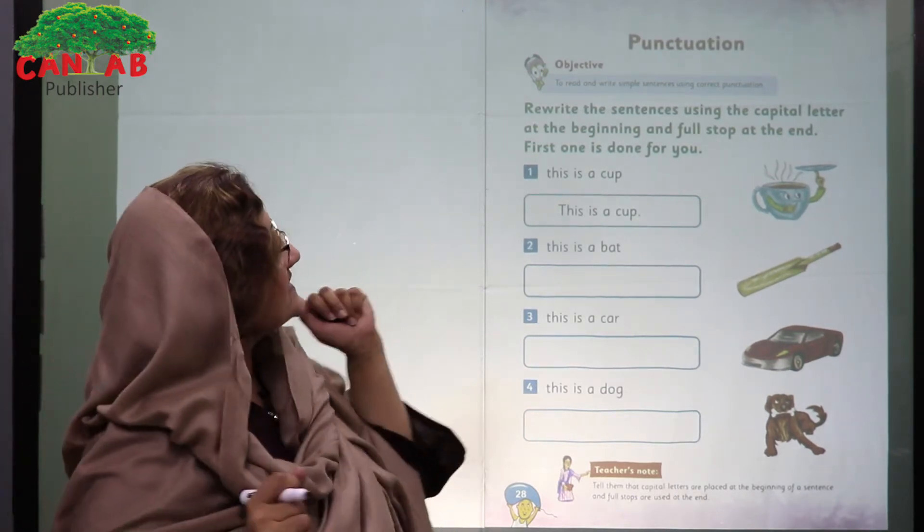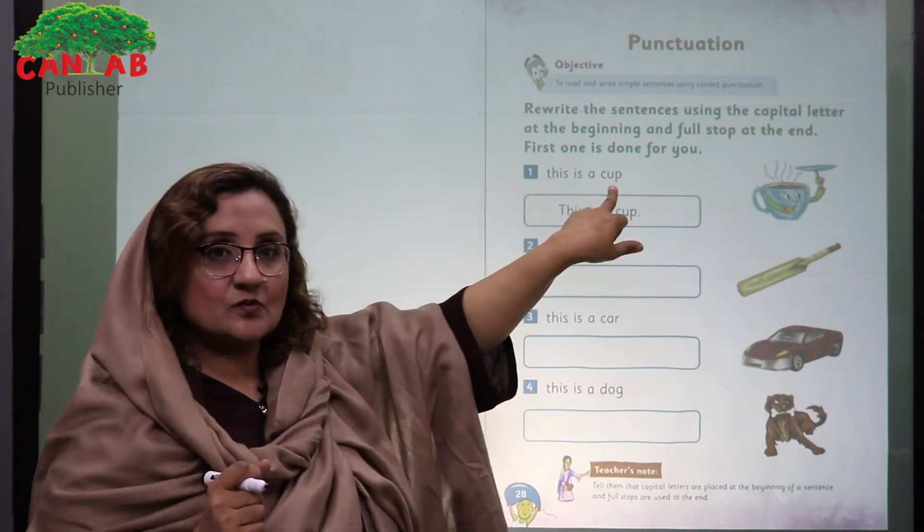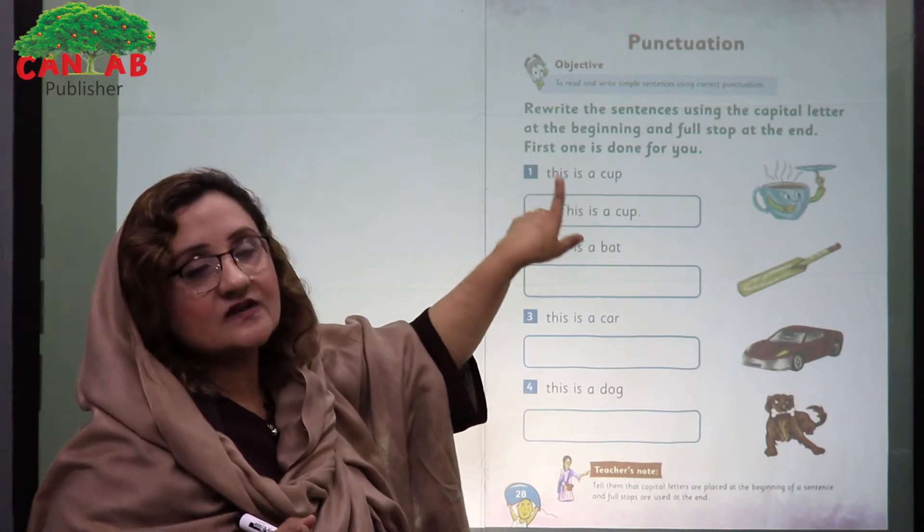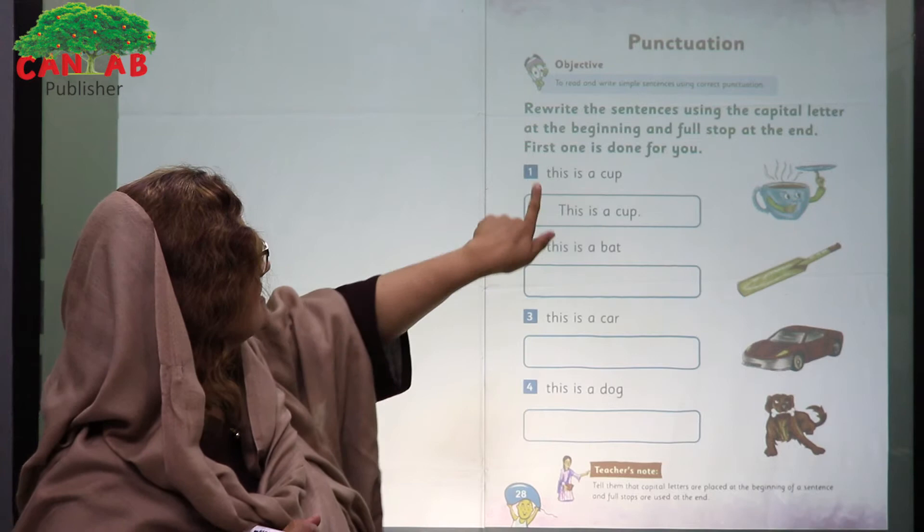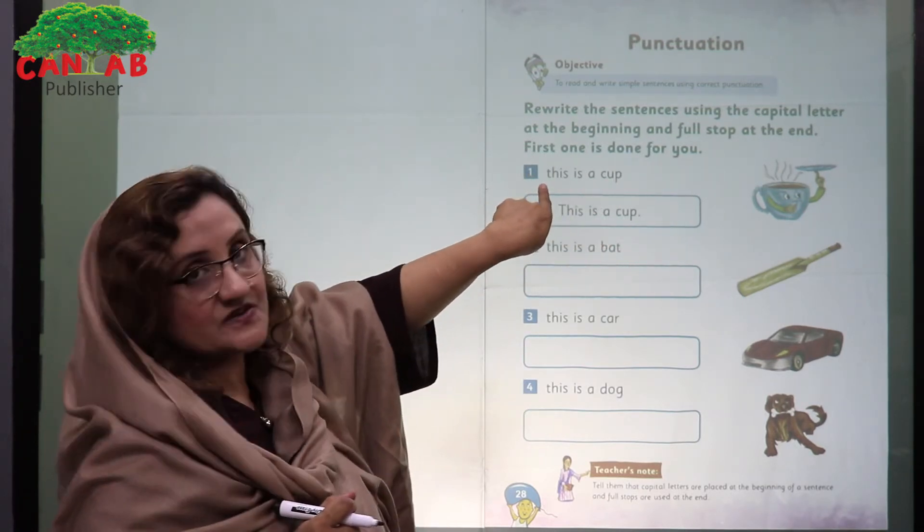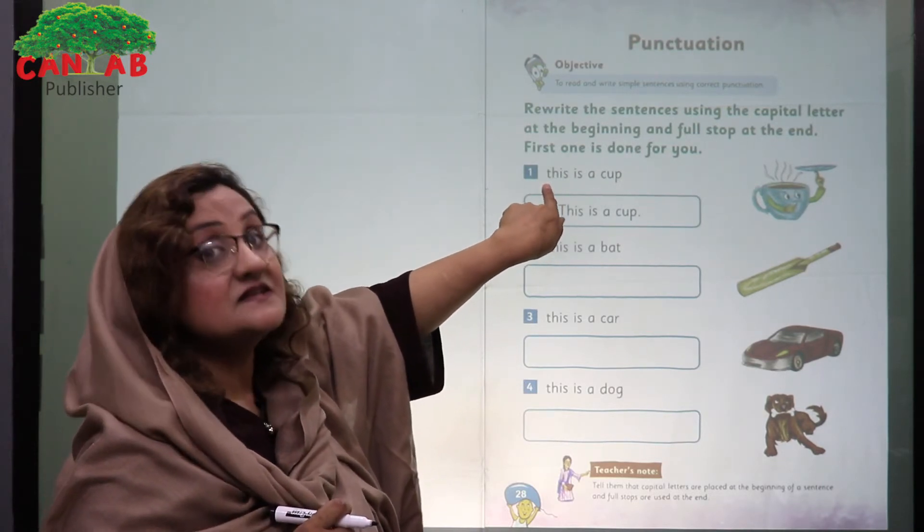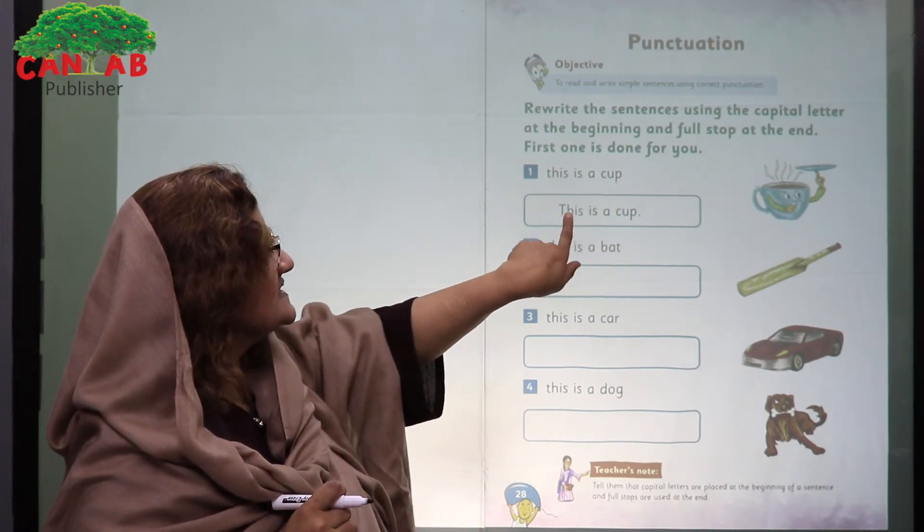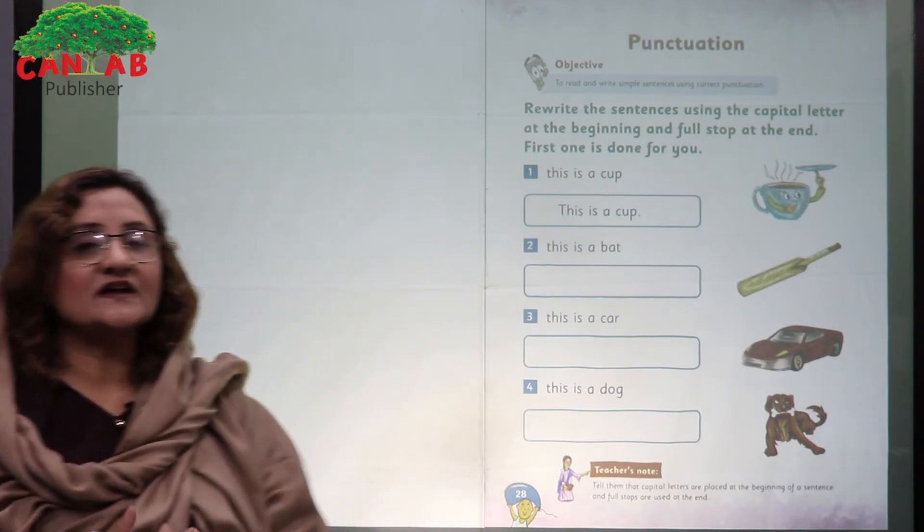I can tell the student that look at here, sentences have been given but these sentences are not the corrected one. There are mistakes. Look at the mistakes, try to find out the mistake. This is a cup. Instead of the capital letter, the sentence has been started with the small letter. Secondly, full stop is missing. So here is the right sentence: This is a cup.